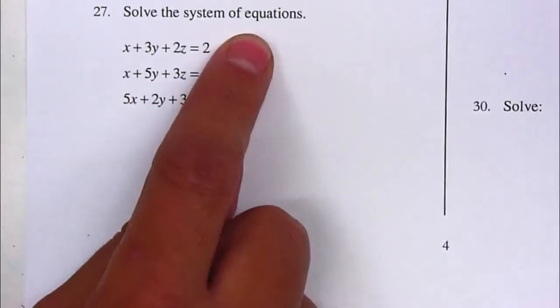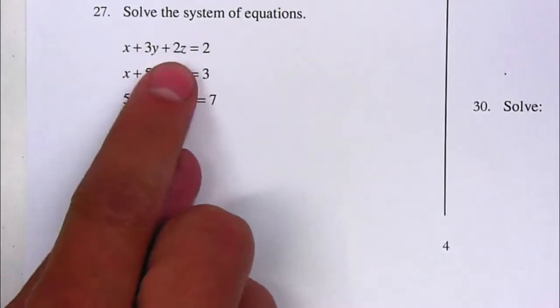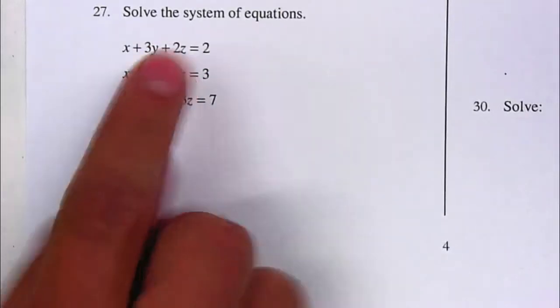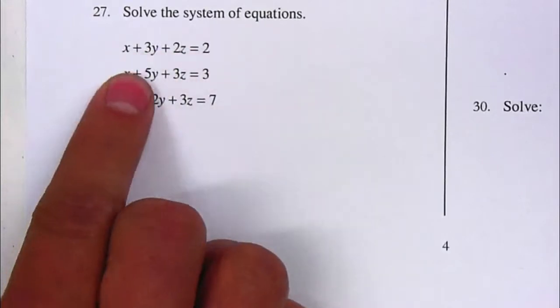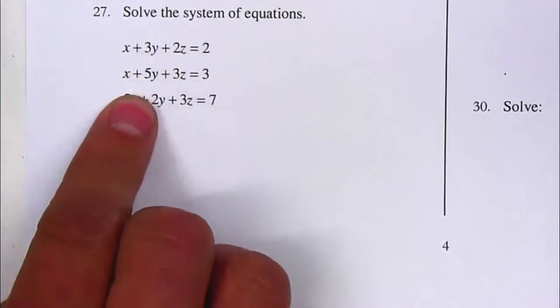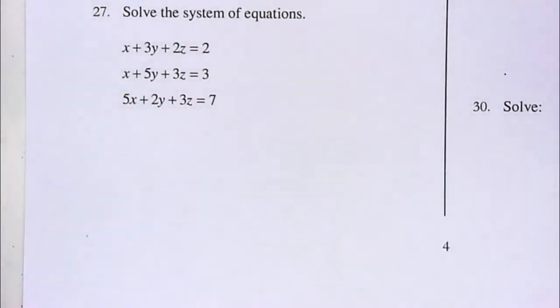Solve the system of equations. We have an X, a Y, and a Z — three variables, so we need three equations. And we do. We're going to solve this system by combination.